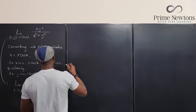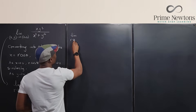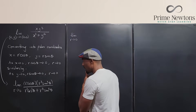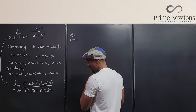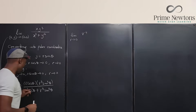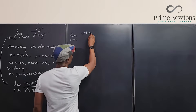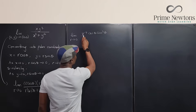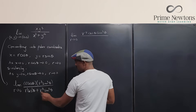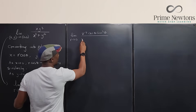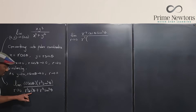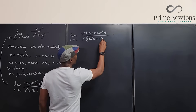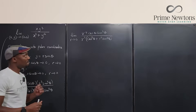We can combine the r terms in the numerator. We have r times r cubed, which gives r to the fourth, times cosine theta sine cubed theta. In the denominator we can factor out r squared, leaving cosine squared theta plus r squared sine to the fourth theta. So the expression becomes the limit as r approaches zero of r to the fourth cosine theta sine cubed theta over r squared times (cosine squared theta plus r squared sine to the fourth theta).